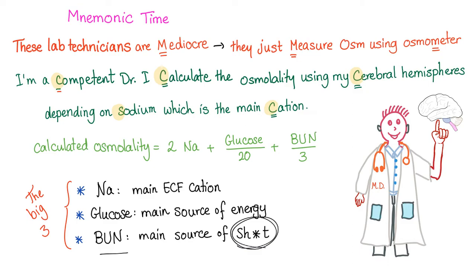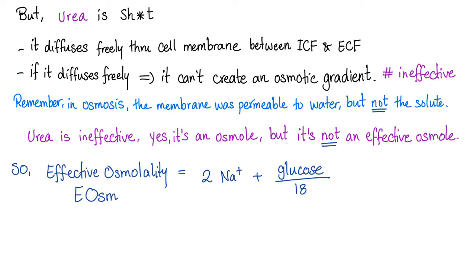Yes — the blood urea nitrogen. Why? Because blood urea nitrogen can safely and freely pass through membranes, going in and going out. How is this an effective osmol? It's not. Remember, one of the conditions for osmosis to happen is that the membrane has to be permeable to water only and not to the solute. But membranes are permeable to urea, so it can just pass in and out. It cannot exert osmosis. It is not effective, so it is not part of the effective osmolality. Urea diffuses freely across the cell membrane and cannot create an osmotic gradient — it's ineffective.